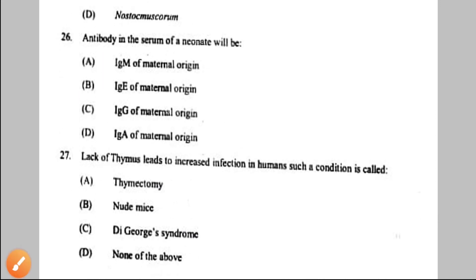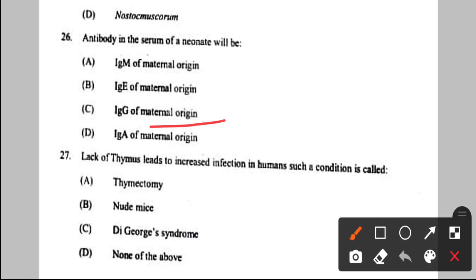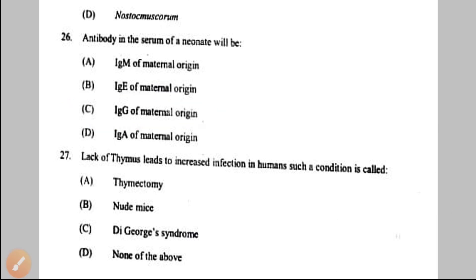Question number 26: antibody in the serum of a neonate. Antibodies in a neonate are of maternal origin. IgA and IgM are in very little amount, but IgG is in high amount. So the answer is option C.